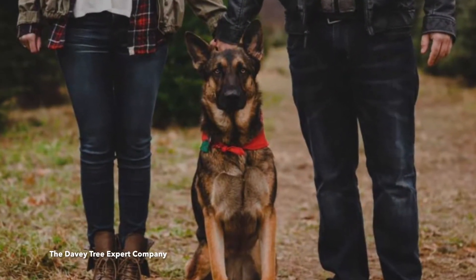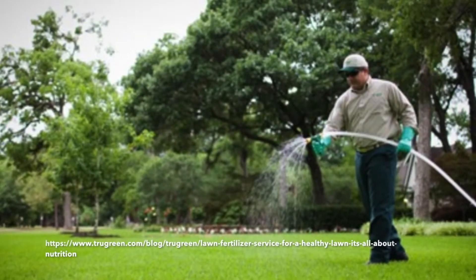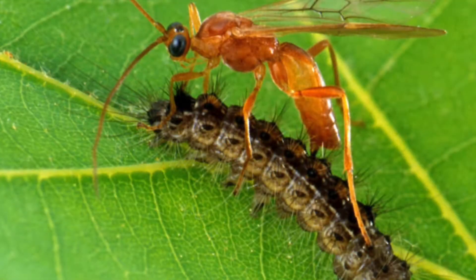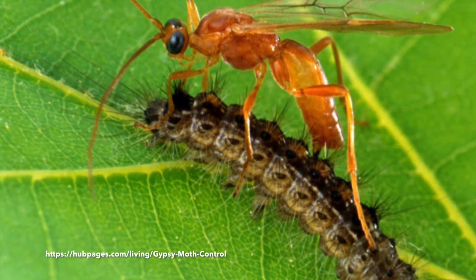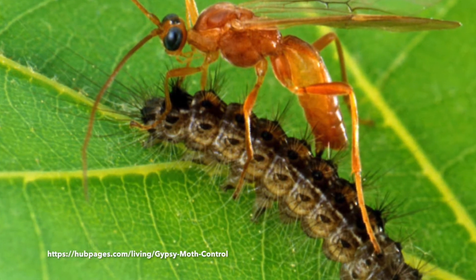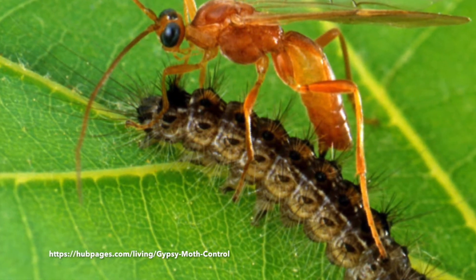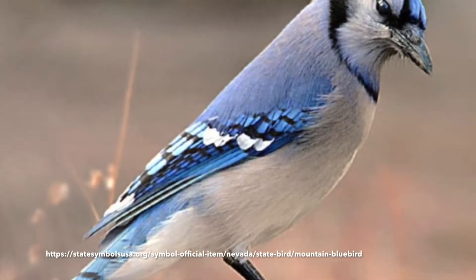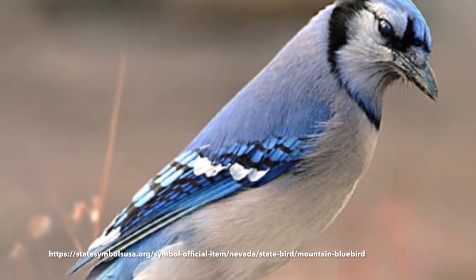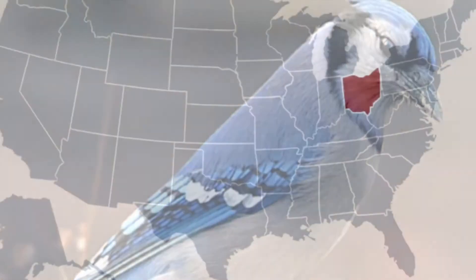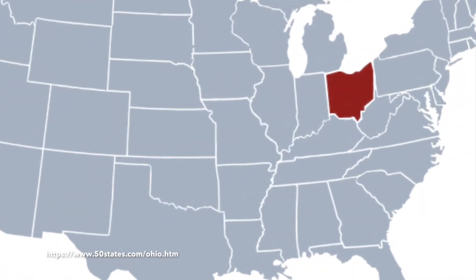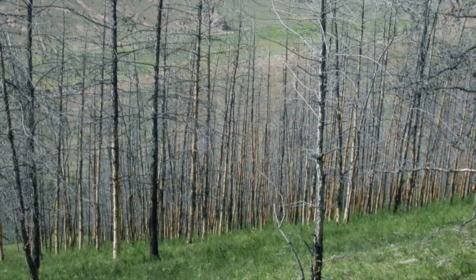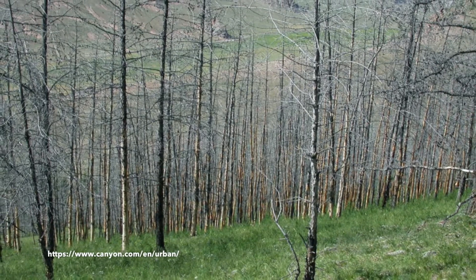Landscape trees infested with larvae can also be treated with applications of other registered products as needed. Natural enemies include insect parasites that attack egg and caterpillar stages, predators such as birds, and disease organisms. Several of these natural control agents occur in Ohio and may add to suppression of gypsy moth, especially in forested areas.